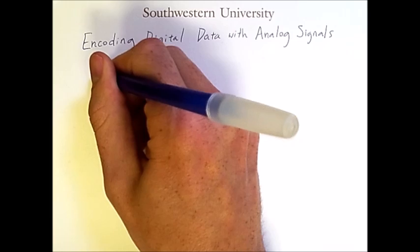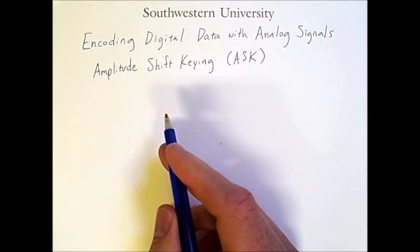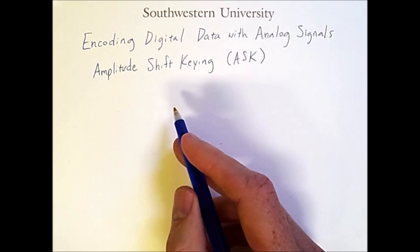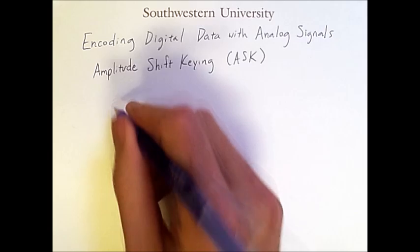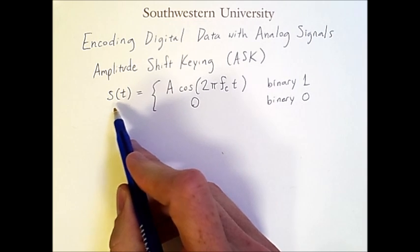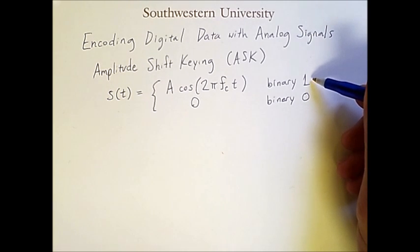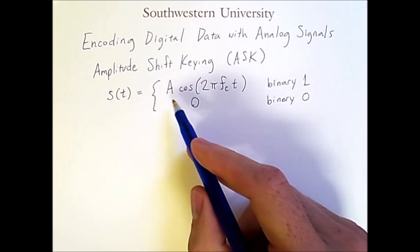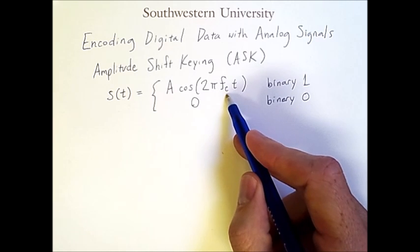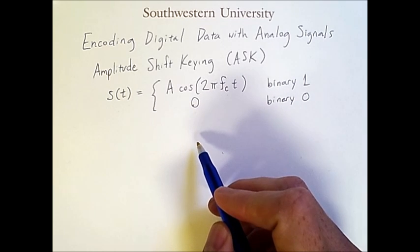For example, one approach is known as amplitude shift keying, and this approach involves having a wave that either has a positive amplitude or an amplitude of 0 to encode the bits 1 and 0. The formula over time looks like this: S is the function for the signal being transmitted, T is the current time of the transmission, and if we are encoding a binary 1 at that time, then the signal is some amplitude times cosine of 2pi times some carrier frequency times the time. Otherwise, 0 is the voltage of the signal.